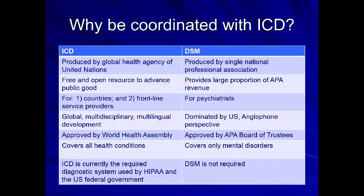Comparing the ICD and DSM: the ICD is produced by the World Health Organization of the United Nations; the DSM is produced by the American Psychiatric Association. The ICD is free; the DSM generates revenue for the APA. The ICD is used by countries to get statistics on mental health and for frontline service providers; the DSM is primarily for psychiatrists and insurance companies. The ICD is more global; the DSM is primarily U.S.-based and anglophone. The ICD covers both mental and physical health conditions; the DSM covers only mental health. The ICD is currently required by HIPAA and the U.S. federal government; the DSM is not required. Within your lifetime, we may no longer be using the DSM.